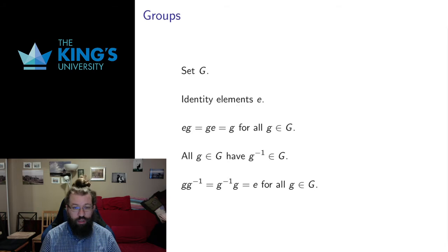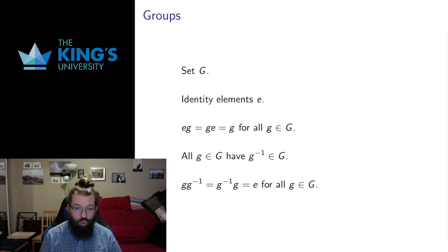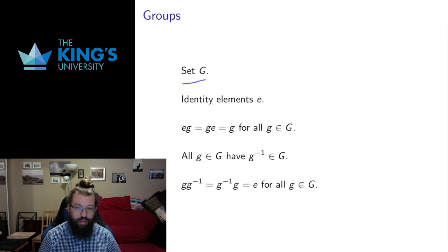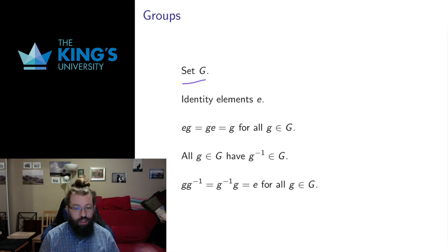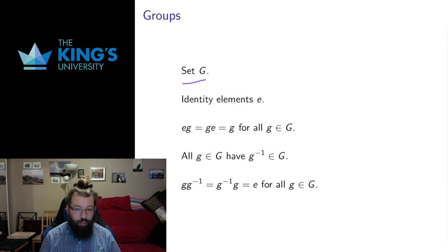I use the term group here, and I've used it in previous videos when I talked about the general linear group, the special linear group, and the orthogonal group. Well, a group is a set G that has some operation on it, which we typically call multiplication — though it doesn't have to be strictly multiplication; it could be addition or composition or matrix multiplication.